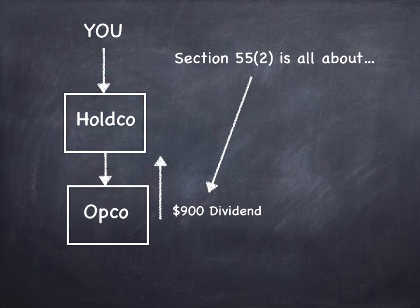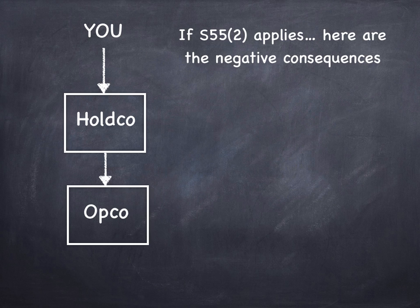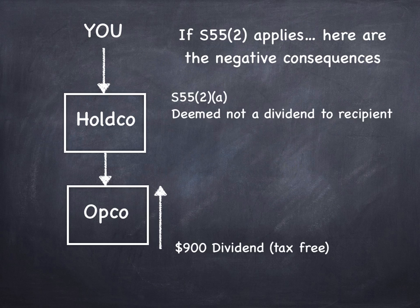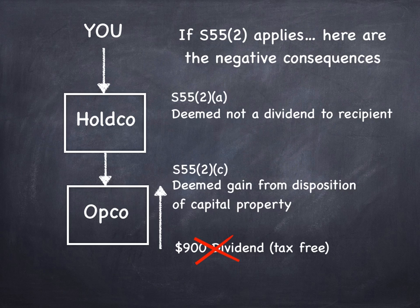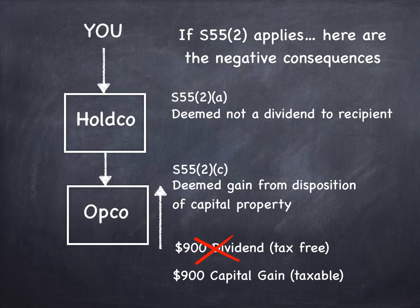In a nutshell, Section 55.2 is really all about that dividend — how is it going to be treated? Well, if 55.2 applies, there are some negative consequences. The first one, 55.2(a), says that if this section applies to your transaction or series of transactions, that dividend that you thought was tax-free — sorry — it's going to be deemed not to be a dividend to the recipient. Furthermore, under 55.2(c), it is going to be deemed a gain from a disposition of capital property, and it's going to be a capital gain instead of a dividend, taxable as a capital gain. So basically, we've converted a tax-free dividend into a taxable capital gain.